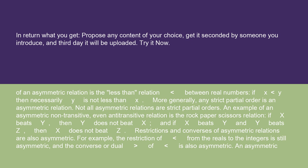An example of an asymmetric non-transitive, even antitransitive relation is the rock-paper-scissors relation. If X beats Y, then Y does not beat X. And if X beats Y and Y beats Z, then X does not beat Z.